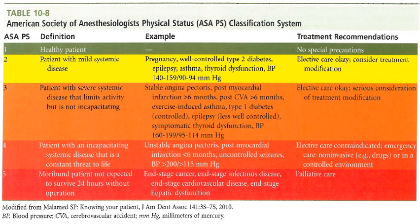The American Society of Anesthesiologists has formulated the physical status classification system based on the medical condition of the patient. We use this system as a guideline for whether we need special precautions before dental treatment, whether elective care is appropriate, or whether only emergency care is allowed. Class 1 is the healthy patient — no special precautions needed. Class 2 includes patients with mild systemic disease, like pregnancy or well-controlled type 2 diabetes mellitus, where elective care is okay but some treatment modifications might be considered.